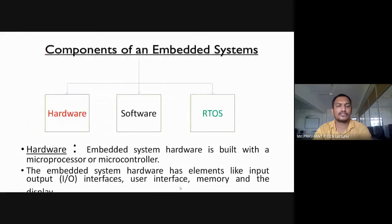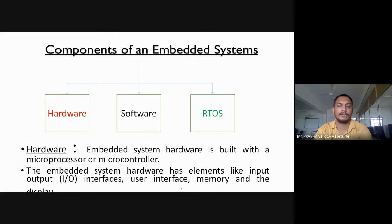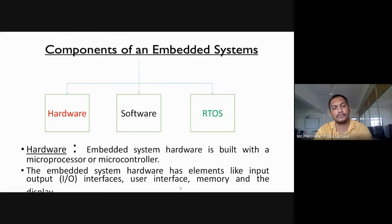The next topic is the components of an embedded system. There are mainly three main components: one is called hardware, another is software, and the third is RTOS — Real Time Operating System. In hardware, an embedded system is built with a microprocessor or microcontroller. The embedded system hardware has elements like input, output interfaces, user interfaces, memory, and display.